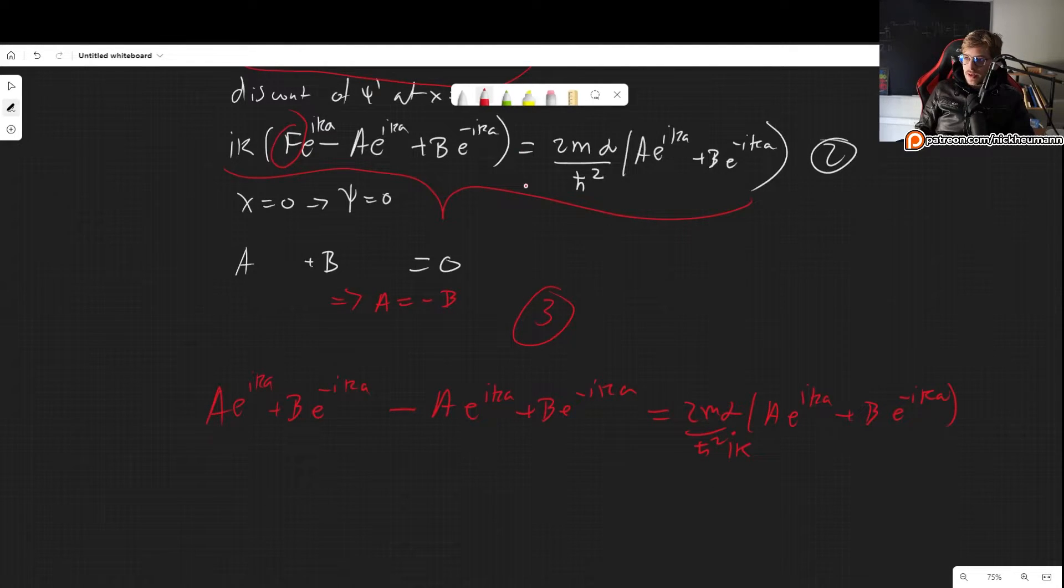this is equal to 2m alpha over h bar squared, A e to the i k a plus B e to the minus i k a. And let's not forget about the i k that we still had there. Okay, so now we can apply this condition that A is equal to minus B. It doesn't matter which one you substitute. It's going to be the same in the end. I'm going to just replace B for minus A because, I don't know, I prefer to have A, but it really doesn't matter. So this cancels out this. And then this B will be minus A.